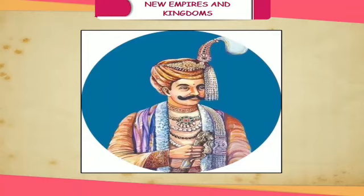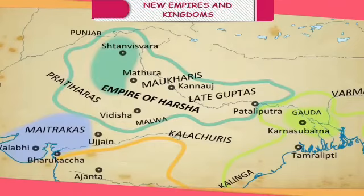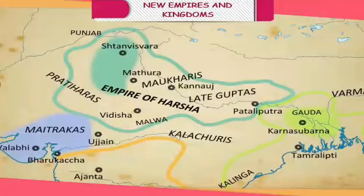Harshvardhana: While we learn a lot about the Gupta period from prashastis, some kings are known through their biographies. A notable example is the life story of King Harshvardhana. The Harshacharita is a biography of King Harshvardhana, who ruled in the 7th century CE. The biography was written by his court poet Banabhatta in Sanskrit. The writings of the Chinese traveler and scholar Xuanzang also describe the rule of Harshvardhana.